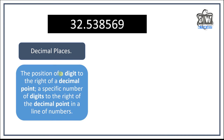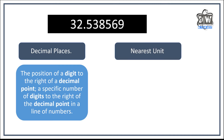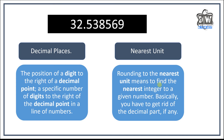Let's look at a number: 32.538569. Today we're talking about rounding to the nearest unit or rounding to decimal places. These are all decimal numbers because they're after the decimal point. This is the units column — the first whole number, or nearest whole number, same thing. Decimal places are the position of the digit to the right of the decimal. Rounding to the nearest unit means finding the nearest integer — you have to get rid of the decimal part entirely.